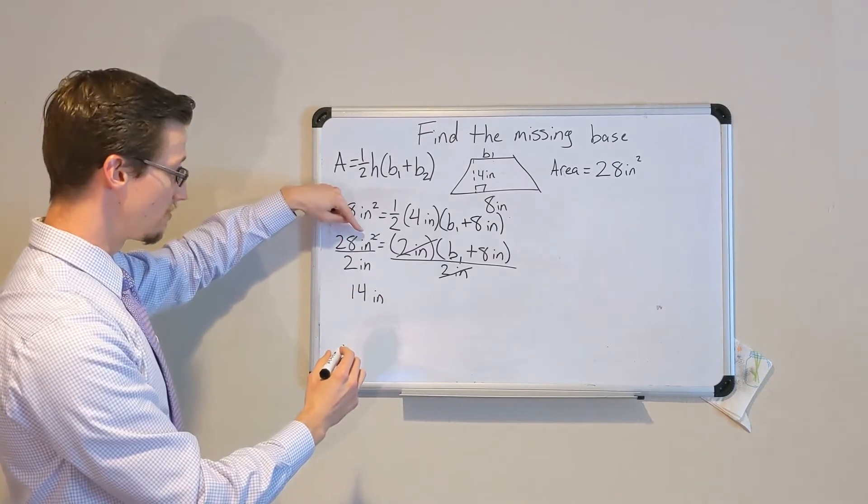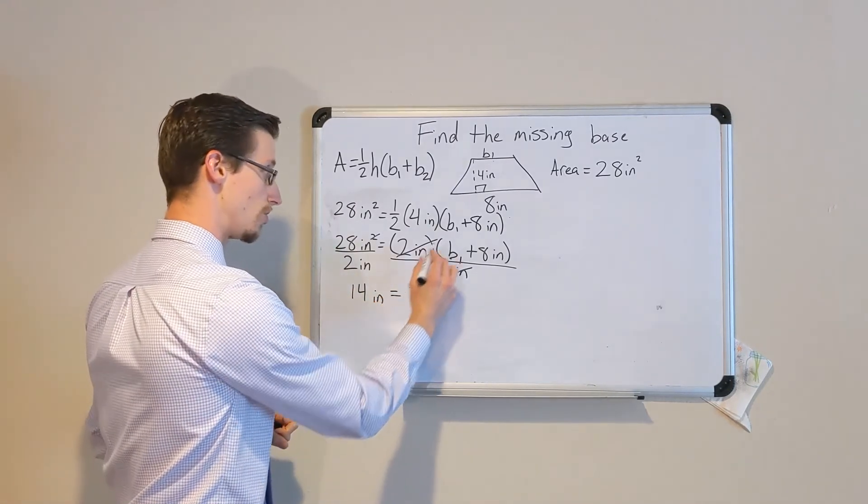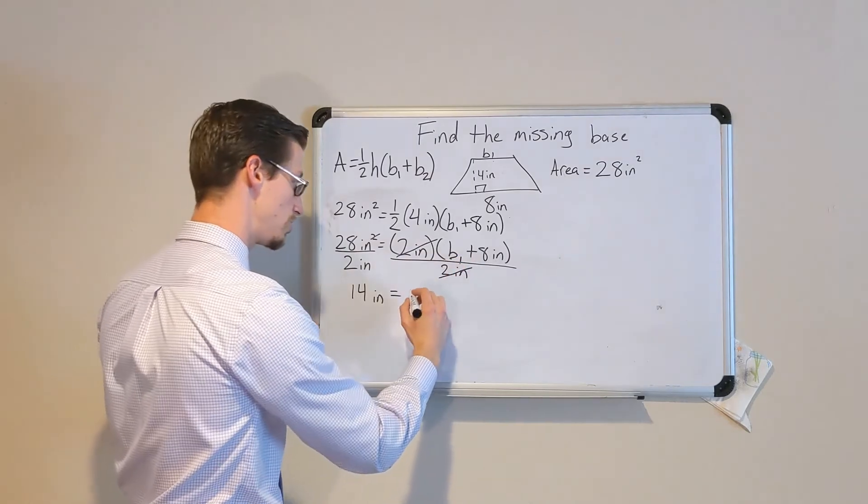Notice, once again, when we divide inches squared by inches, we're left with just inches. And on the right side, we just have base 1 plus 8 inches.